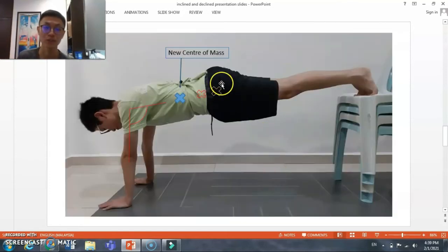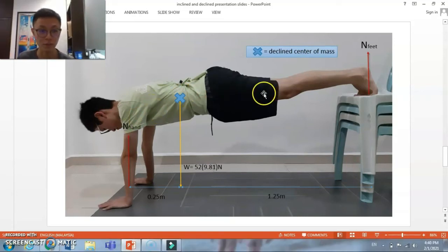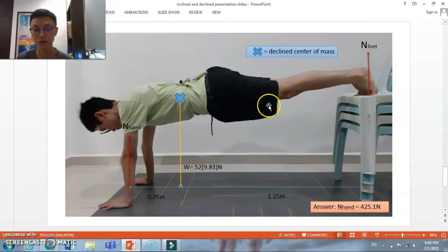How about the decline push-ups? Is it harder or easier than the normal one? You all can try to solve it using the same approach as I explained before. But please remember that the center of mass will move upwards when the angle of the arms increases. Here is the free body diagram for it. You can pause the video for the calculations. And here is the answer. Do you all get it correct?